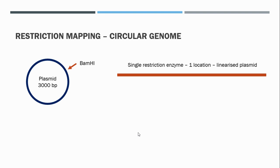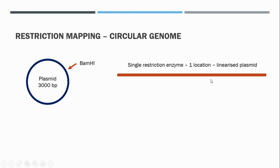Now let's move on to mapping a circular genome. Say we have a plasmid whose DNA sequence is unknown. We can use different restriction enzymes and observe what happens to this plasmid under different conditions. In this scenario, we're looking at restriction enzymes that cleave this plasmid in just one location, so we get just one product when we linearize it. If we restrict with BamHI, for example, we end up with one linearized plasmid, giving us a linear fragment that can be used in double digestion studies.